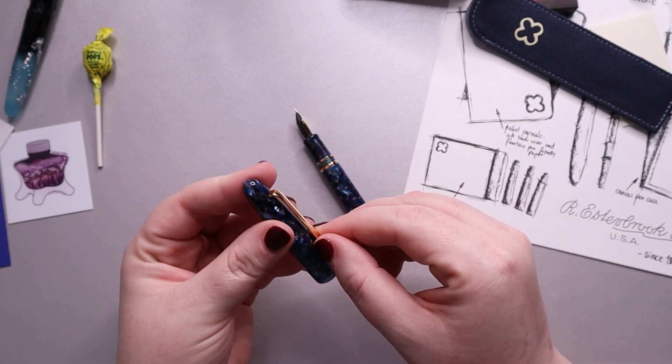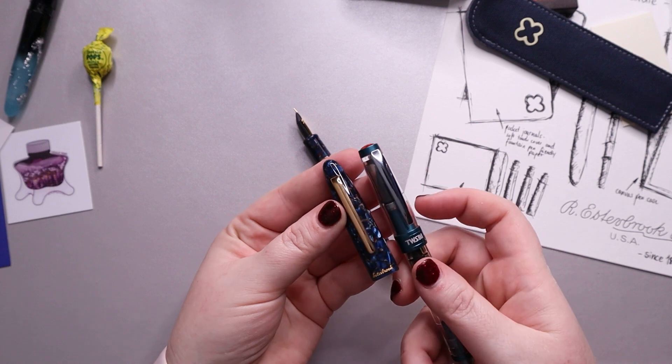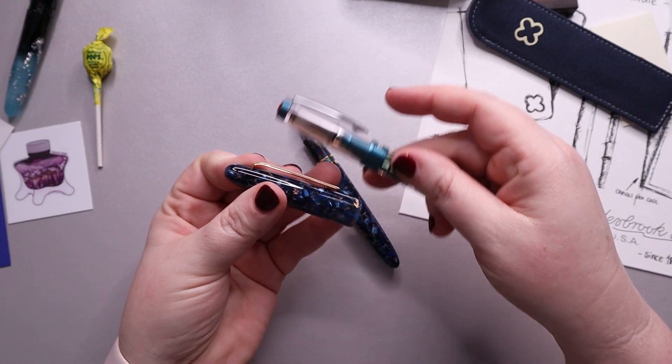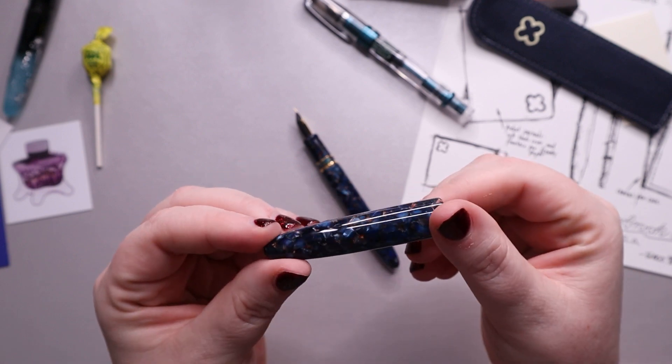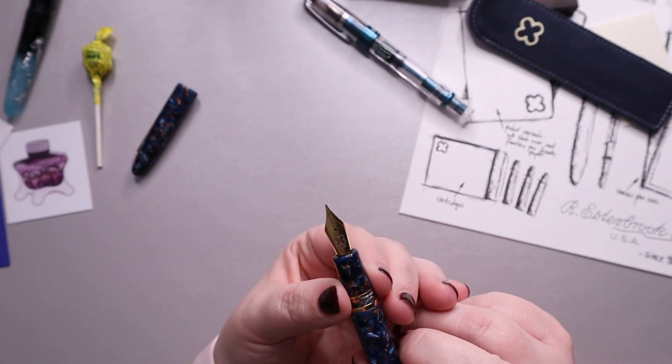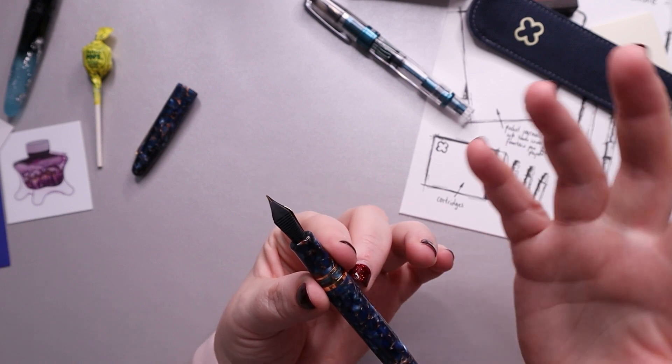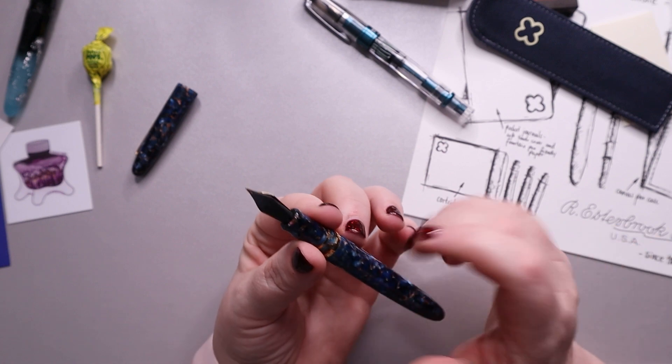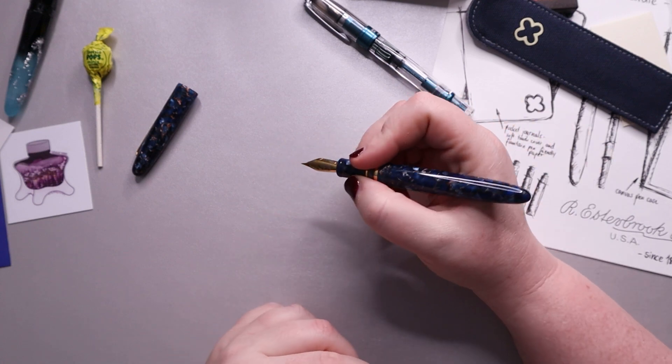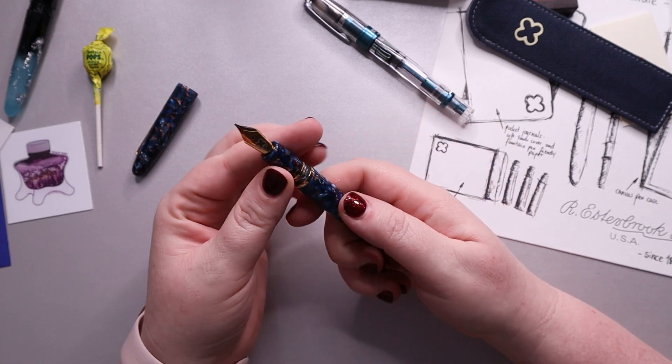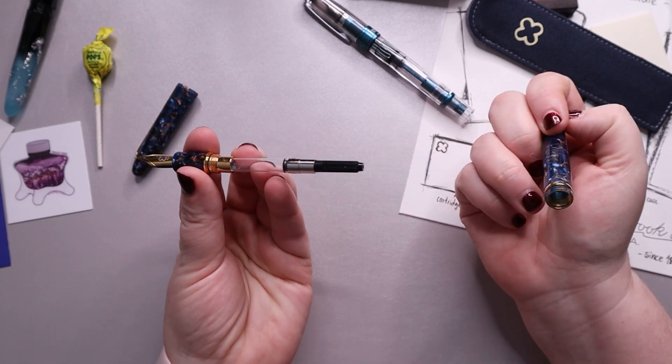So on the cap we have of course the clip. Sturdy. And very similar to the clip I have on my Twsbi, just like thinner I would say. So nothing really to write home about on that. And it is engraved here with the Estabrook name. Now I did get a fine nib on this. Not that it says it there. But they only had fine, which was fine with me because I happen to like small writing. It's supposed to be a very wet writing pen. We have two gold bands here and a slight step up there. But I don't think it's going to bother me much to be honest. And then if we unscrew this part, there's our converter.